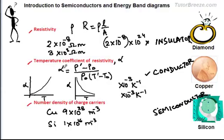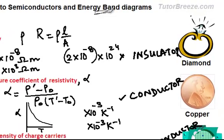All three of these values can be measured experimentally. But there is still another feature used to distinguish between insulators, conductors, and semiconductors — and that is the energy band structure. So now we will look at energy band structure in crystalline solids.